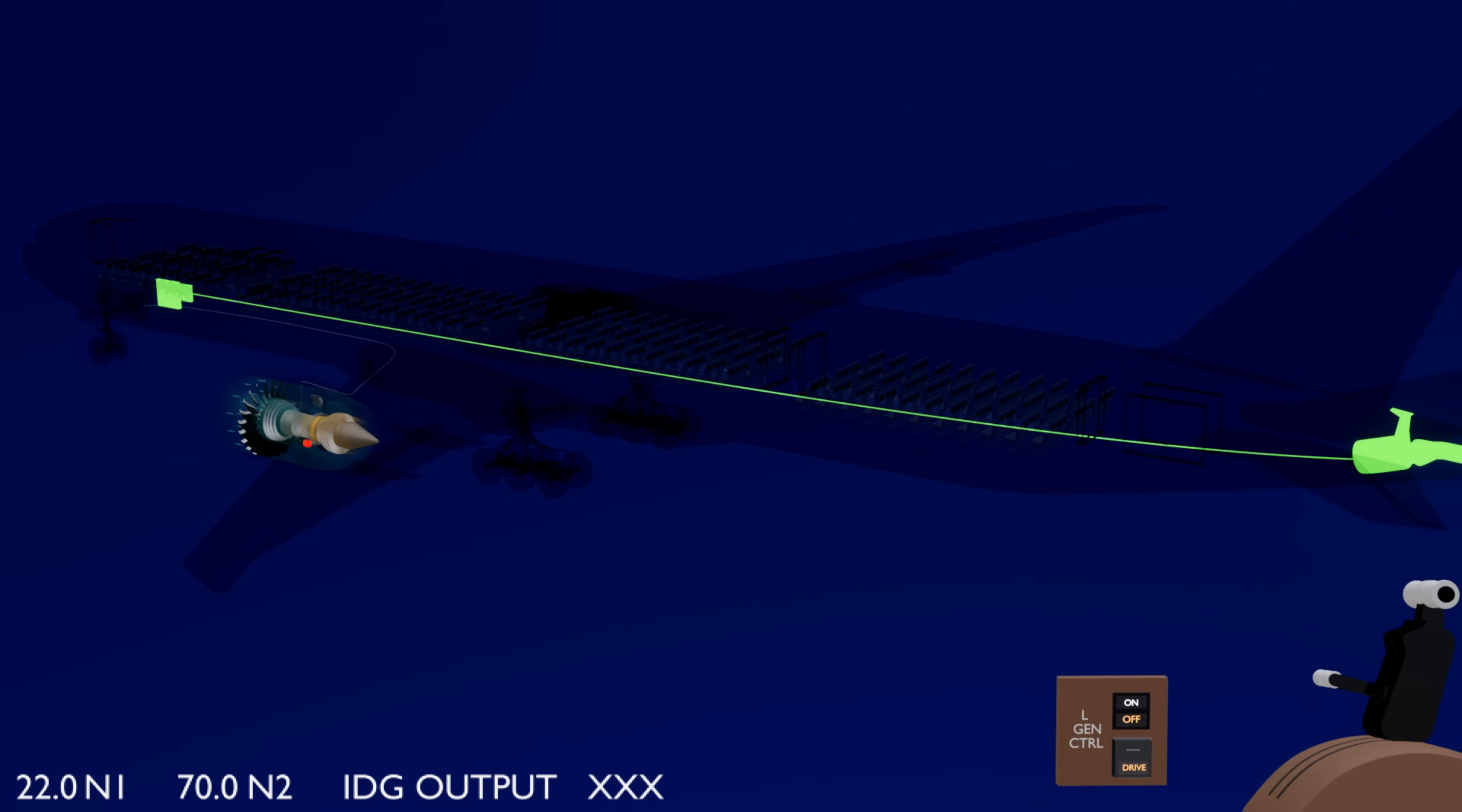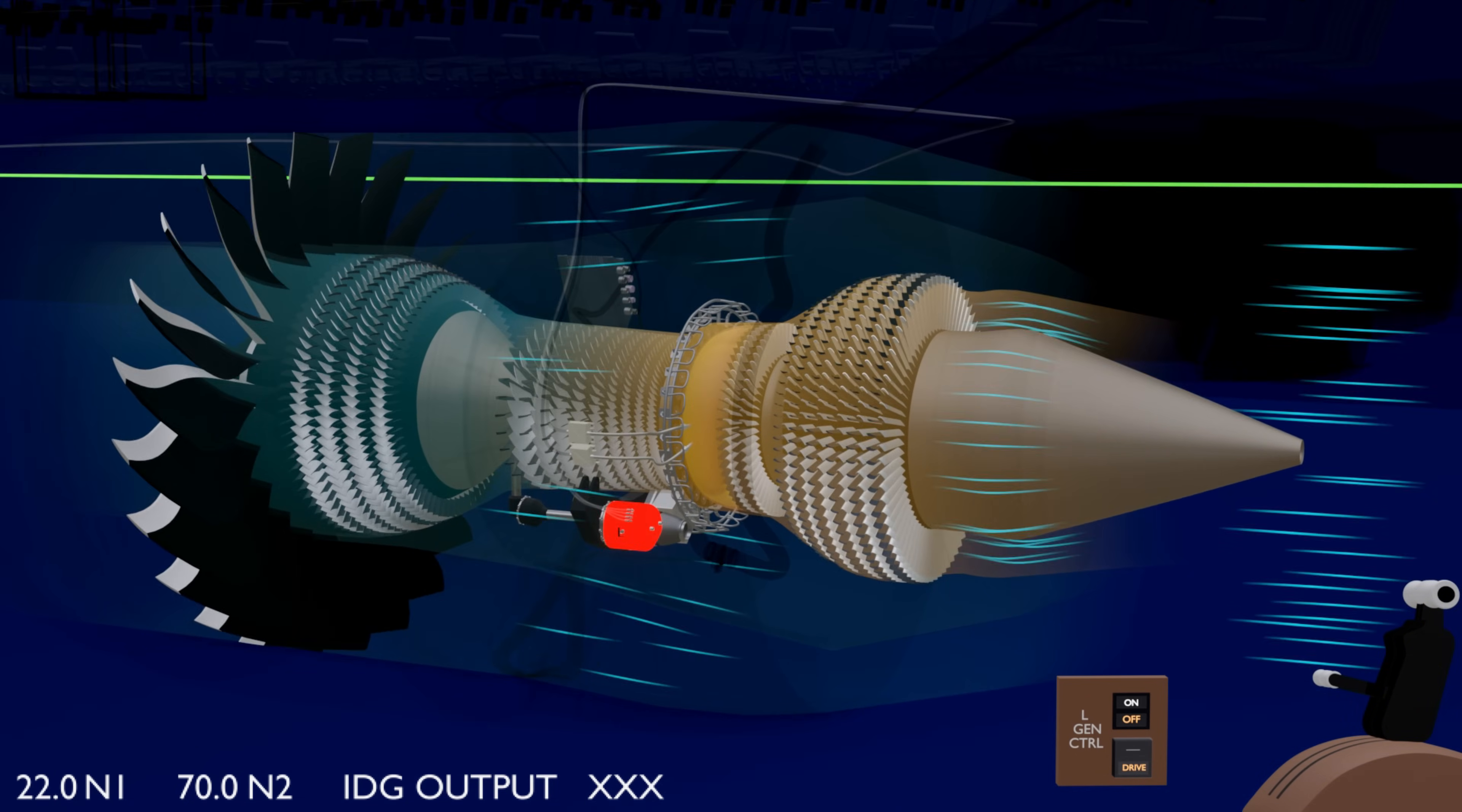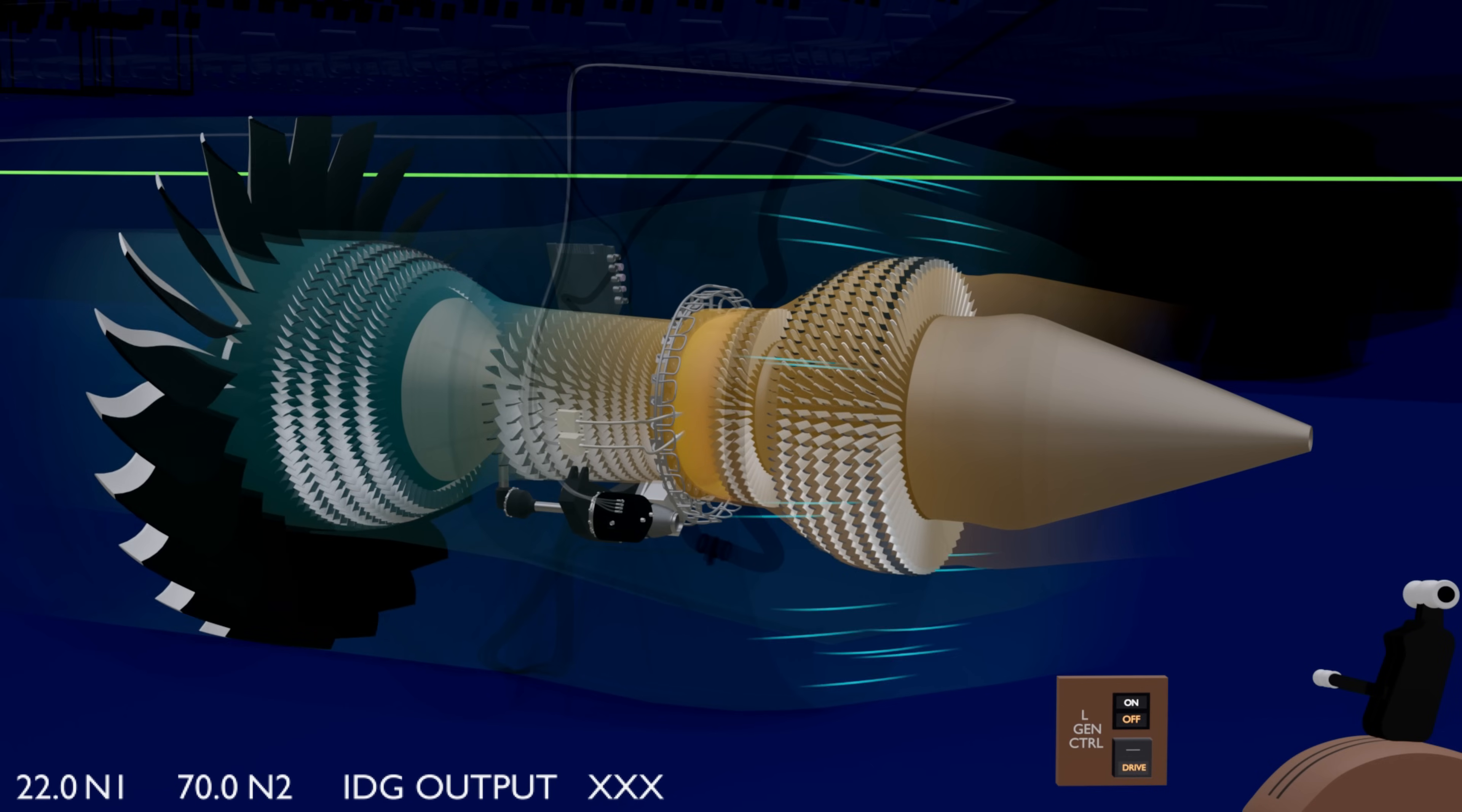In case the IDG malfunctions due to excessive heating, a drive light illuminates on the disconnect switch. Using the switch mechanically decouples the IDG from the gearbox and prevents further damage.